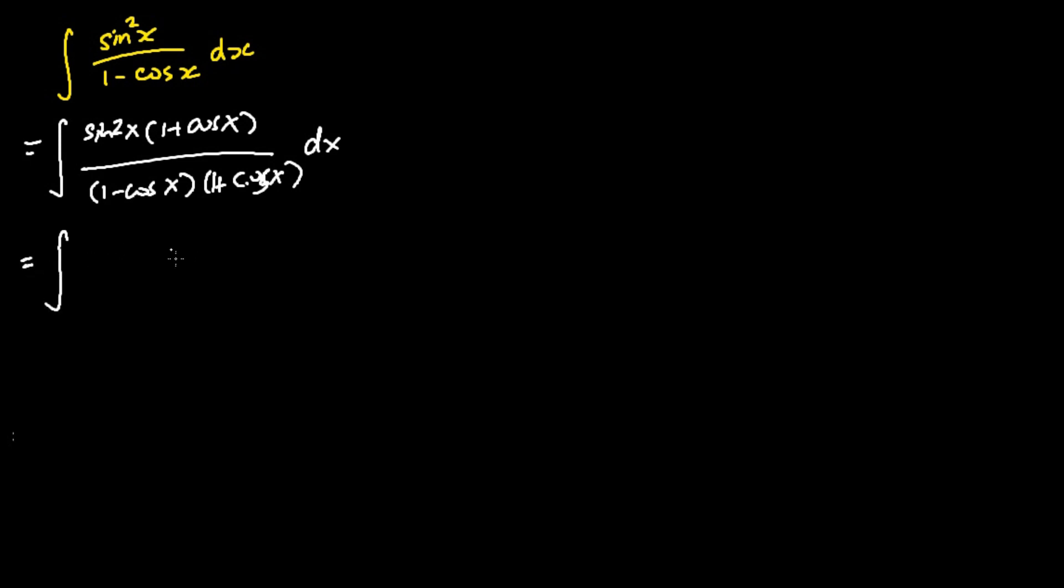The next thing we're going to do is expand the numerator and the denominator. So for the numerator, we have sine squared x plus sine squared x cosine x. For the denominator, it will be 1 minus cosine squared x.